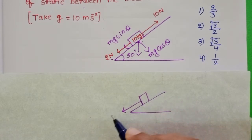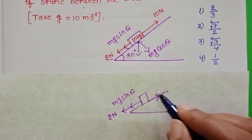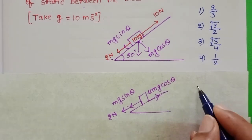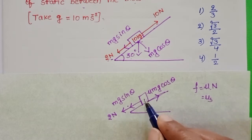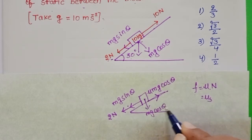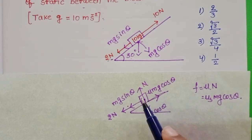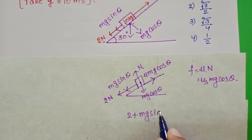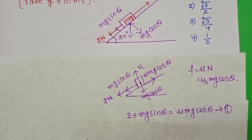Along the inclined plane in the downward direction, 2 newtons of force is applied, and at the same time mg sinθ also acts in the downward direction. In the opposite direction, frictional force μ mg cosθ acts on the body. Here, F equals μN where μ is the coefficient of static friction and N equals mg cosθ. Setting the resultant force to zero: 2 + mg sinθ = μs mg cosθ. This is Equation 1.